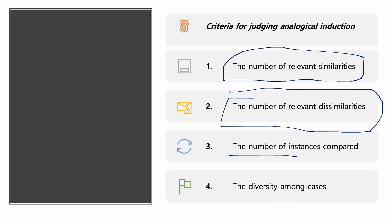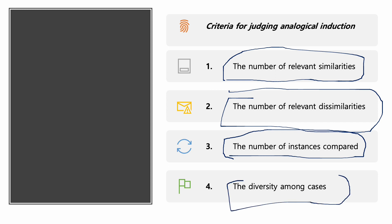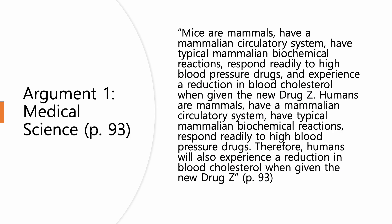Furthermore, you want to look at the number of instances being compared. All things equal, the more instances that are being compared, the stronger the argument. And finally, the diversity among cases — the more diverse the cases that you consider, the stronger the argument, generally speaking. Analogical inductions are useful in the sciences, in the law, in religion, and in everyday contexts. Chapter 5 of the textbook gives several examples from medical science, the law, forensic science, and religion, and I want to illustrate by giving you a couple of examples.